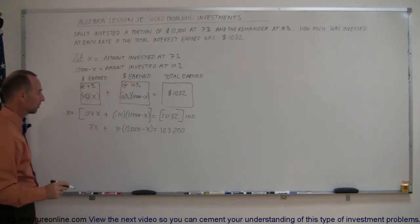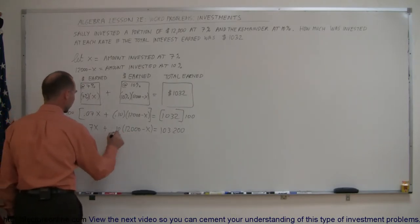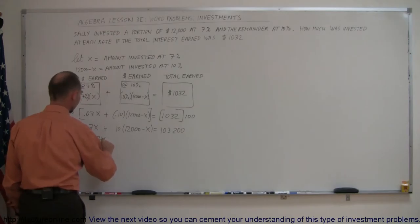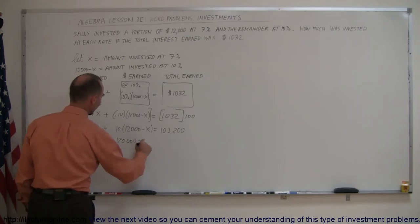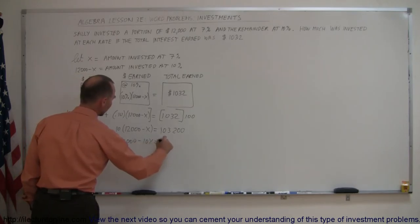Next we multiply through to get rid of the parentheses. 7x plus 10 times 12,000 is 120,000. 10 times the minus x is minus 10x, equals 103,200.